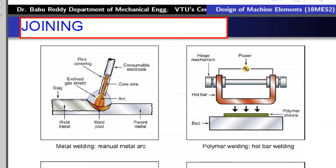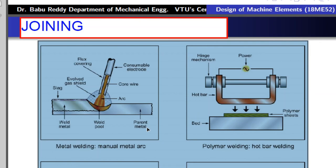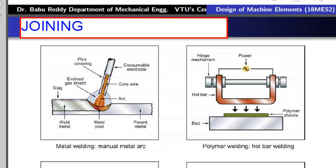Joining is done to join two or more workpieces or components, achieved by various processes such as fastening, welding, and riveting. In metal welding, two metals — similar or dissimilar — are joined by applying high temperature. Both materials reach a molten state and join together upon solidification. Sometimes a third material called filler material is used as a binding material. In polymer welding, heat is applied to polymer components which are simultaneously pressed together to form a bond.